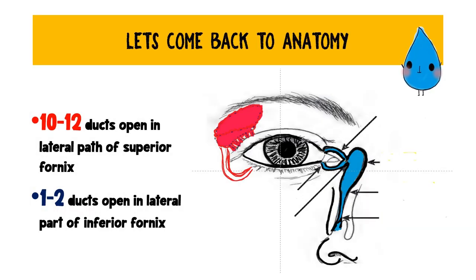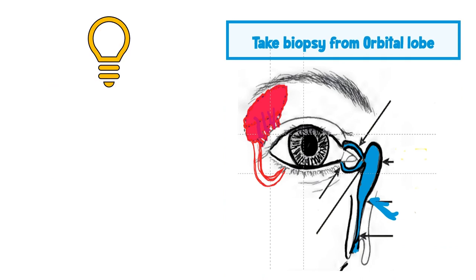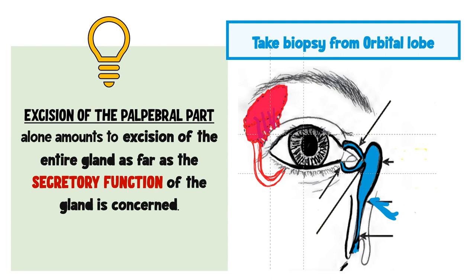There are about 10 to 12 ducts of the lacrimal gland which open in the superior fornix, and 1 to 2 ducts open in the lateral part of the inferior fornix. Importantly, all ducts finally pass through the palpebral lobe before entering the fornix — ducts from the orbital lobe also pass through the palpebral lobe. Therefore, excising the palpebral part alone amounts to excision of the entire gland as far as secretory function is concerned. For this reason, whenever you take a biopsy from the lacrimal gland, it is advisable to take it from the orbital lobe.